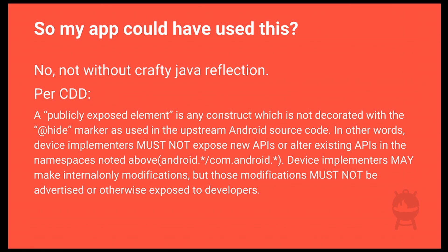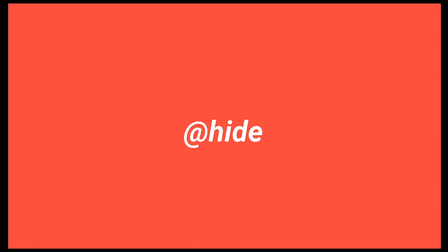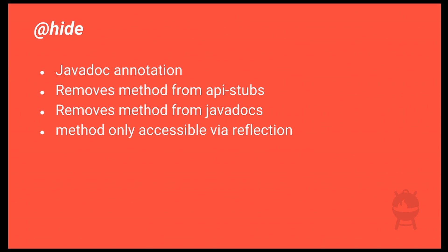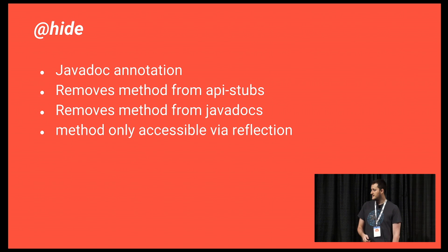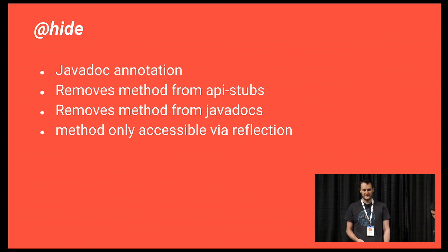Per the Android compatibility documents, any public method in the Android namespace that is not part of the public API must be marked with the @hide annotation. The @hide annotation is a Javadoc annotation specific to Android build time. Any methods you don't want in the public API you annotate with @hide, and during the build they get stripped from the API stubs and Javadocs. They're only accessible via reflection at runtime, which is bad practice.